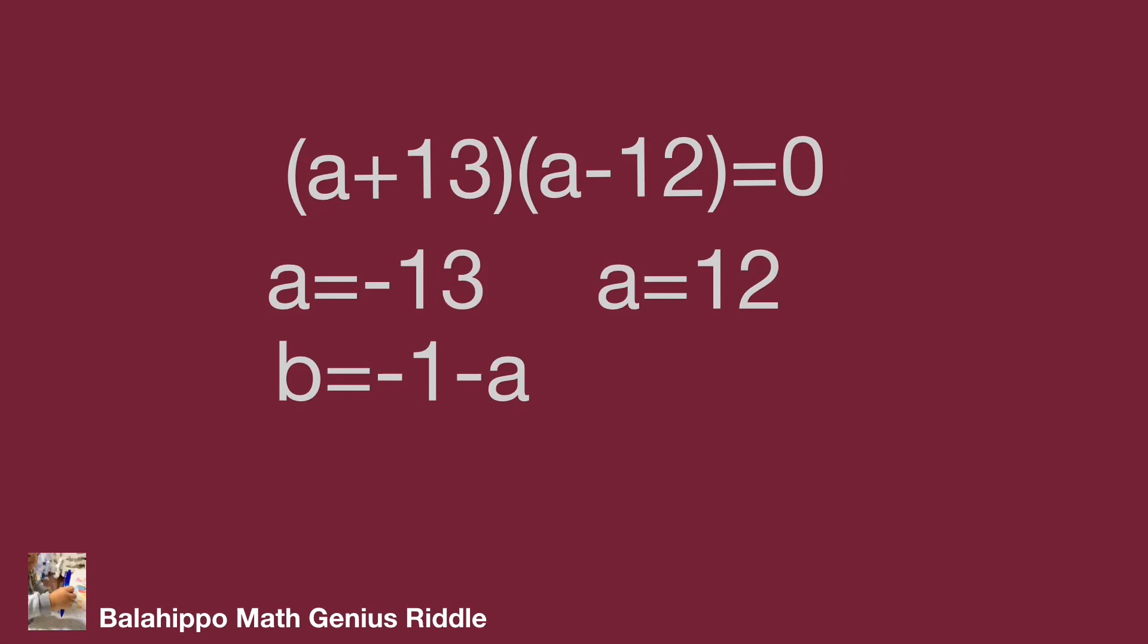The value for a b number pairs are 12 and minus 13, or minus 13 and 12. That's the answer we find. Do you get the result? Hope you too enjoy the video. Thank you.